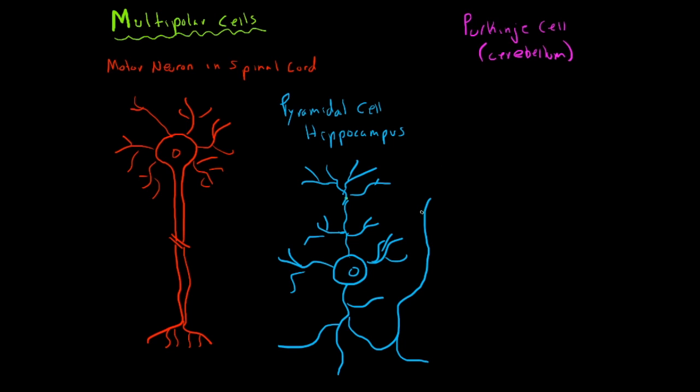Okay, so I will draw the cell body and the axon first. So you have your cell body and your axon, which once again can connect like that. And then up here, you have a multitude of dendrites. A crazy, crazy, crazy amount can be thousands of dendrites in these Purkinje cells.